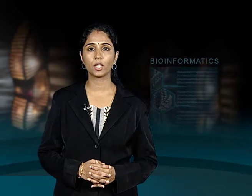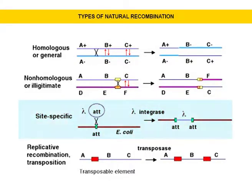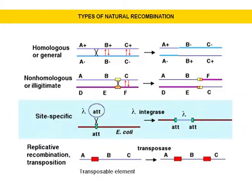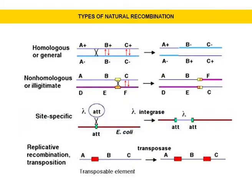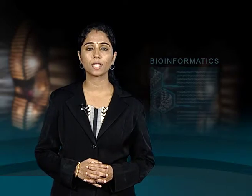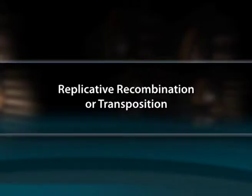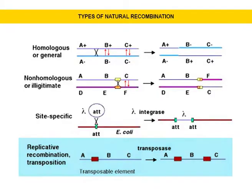Site-specific recombination occurs between particular short sequences, which are about 12 to 24 base pairs present on otherwise dissimilar parental molecules. Site-specific recombination requires a special enzymatic machinery, basically one enzyme or enzyme system for each particular site. Good examples are the systems for integration of bacteriophage lambda into a bacterial chromosome and the rearrangement of immunoglobulin genes in vertebrate animals. The fourth one is replicative recombination or transposition, in which a segment of DNA moves from one location to another either on the same chromosome or a different chromosome and generates a new copy of a segment of DNA.